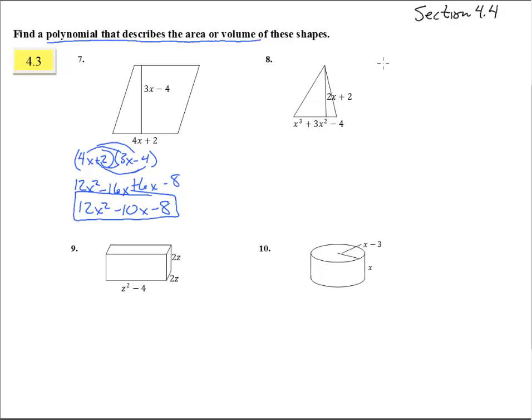Okay, number 8, the formula for a triangle area, that was, if I remember right, was area equals one-half base times height, whereas this guy over here was just base times height.